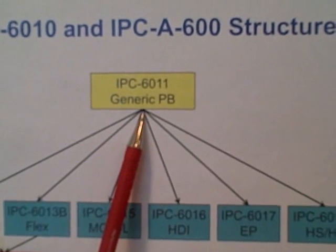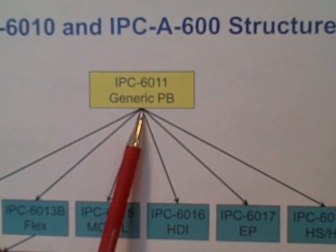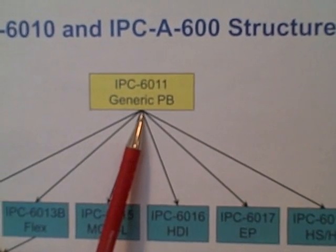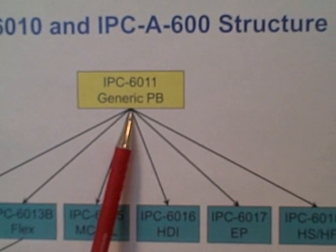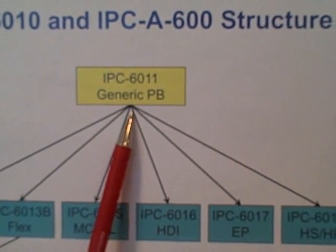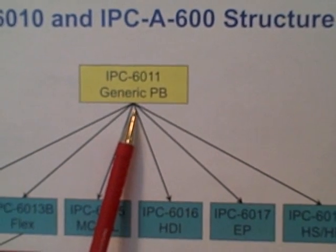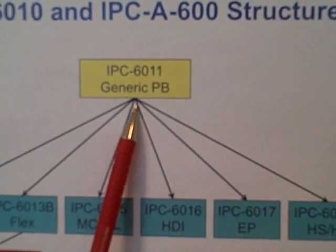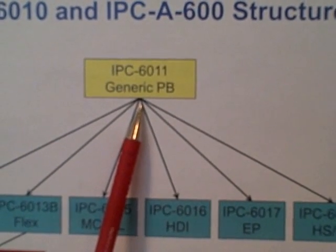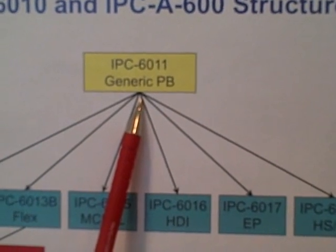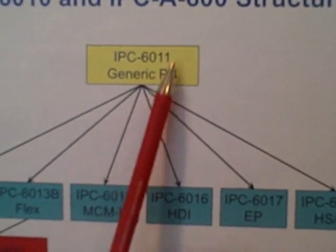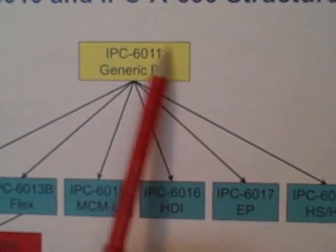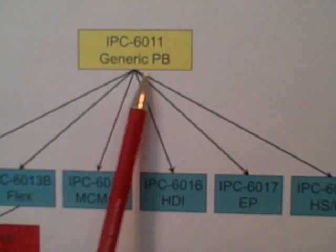Really, this is a document that explains how a customer, such as an OEM, and a supplier, such as a printed board fabricator, would come to utilize the IPC specs for the procurement of printed boards.